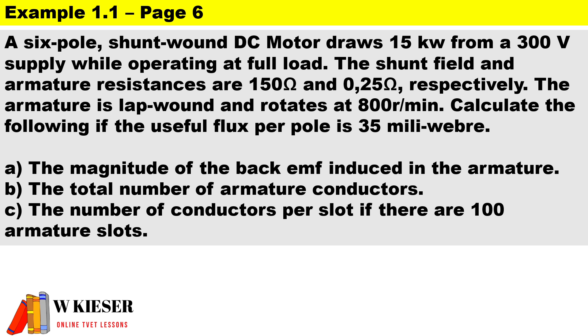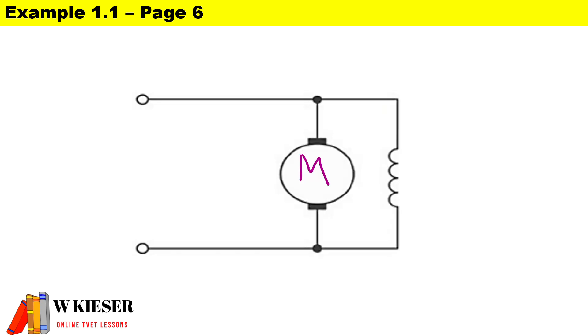The armature is lap wound and rotates at 800 revs per minute. Calculate the following if the useful flux per pole is 35 milliweber. So first of all, let's take a look at our circuit diagram.